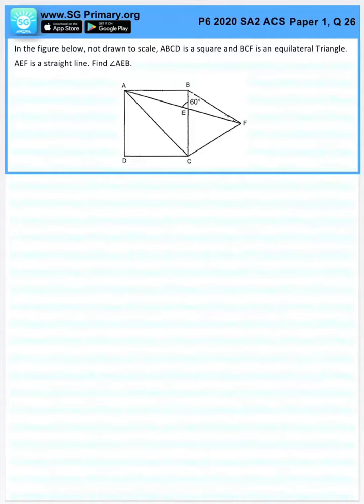Question 26. In the figure below, not drawn to scale, ABCD is a square and BCF is an equilateral triangle. AEF is a straight line. Find angle AEB.